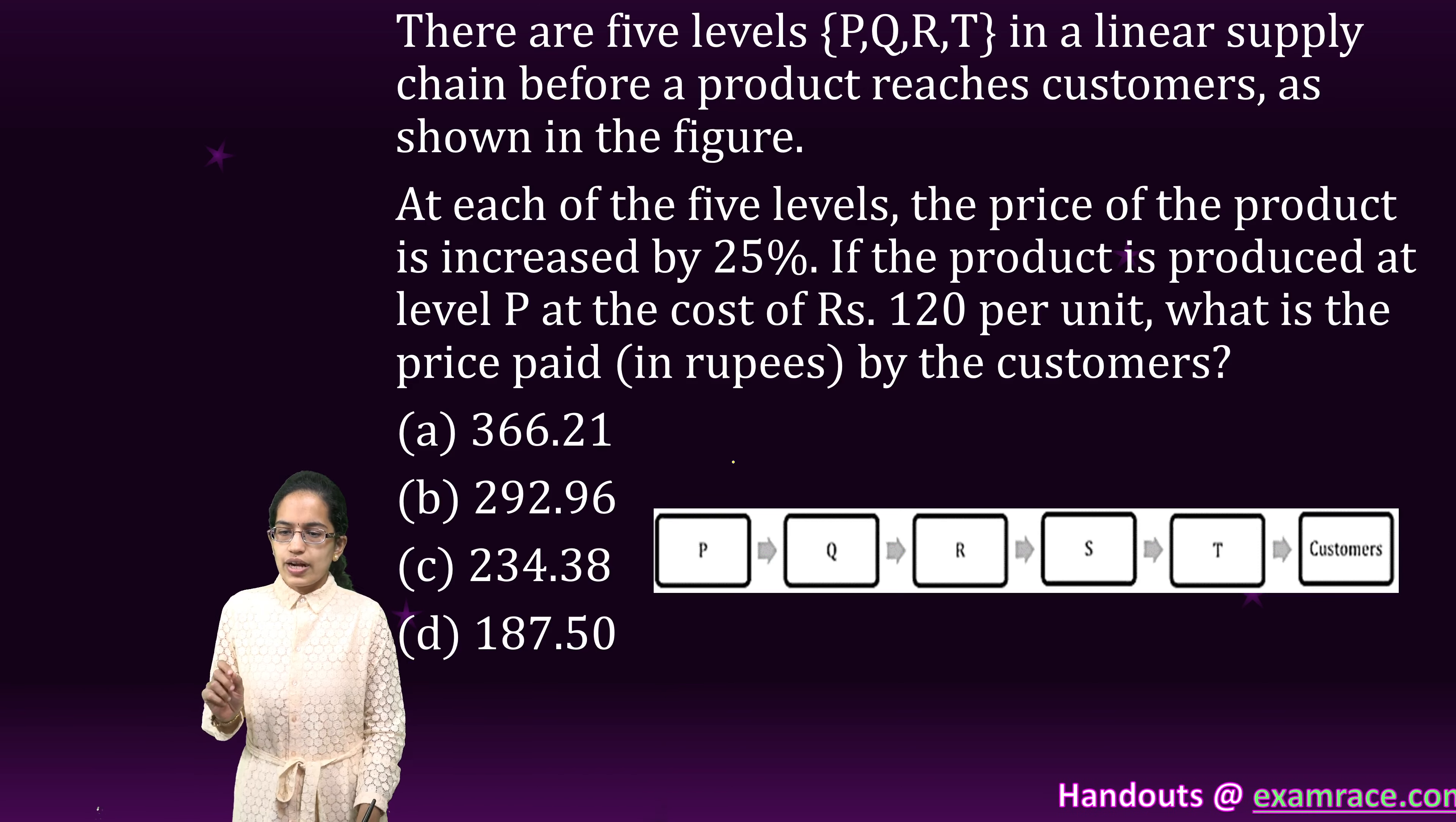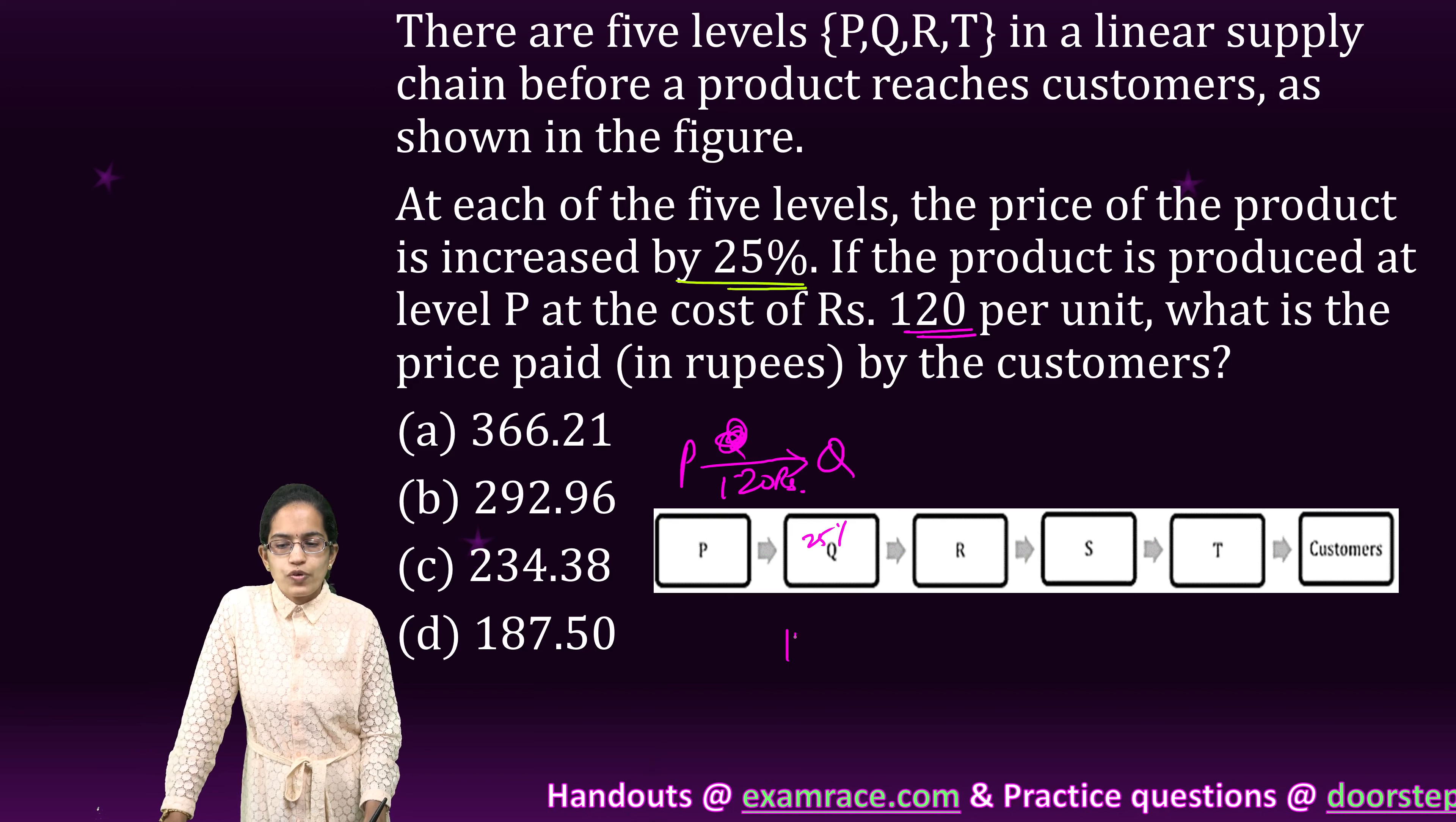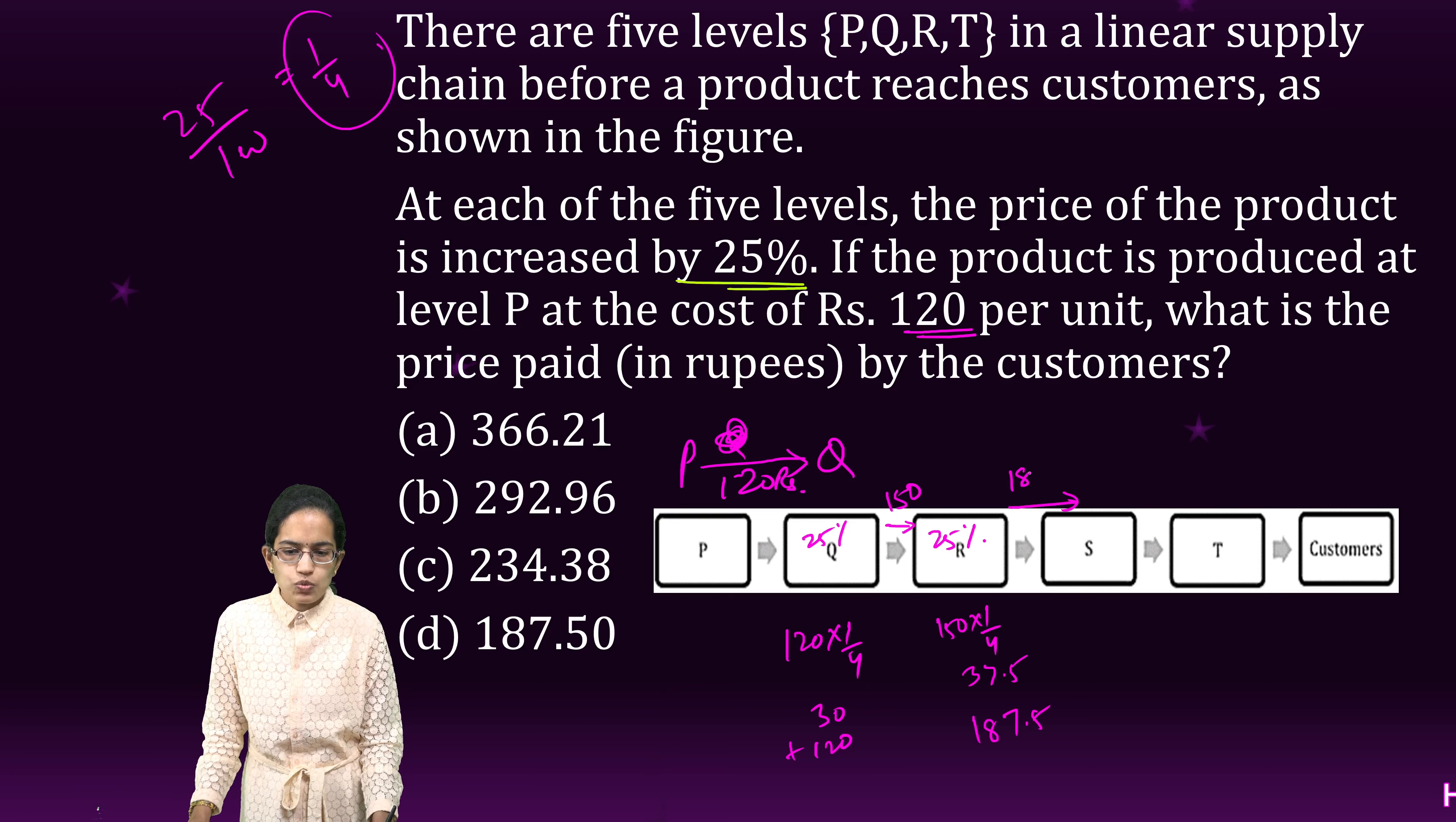The next question is pretty interesting. At each level, the price of the product is increased by 25%. If the product is produced at P at a cost of 120 per unit. So when it comes from P to Q it is 120 rupees. Now here you have 25% increase in the cost. So 25% of 120, so 120 into 1 by 4, that is 30. I add 30 to 120, that makes it 150. So on this line it becomes 150. Now again I increase it by 25%. So 150, one fourth of 150. So 25% is 25 by 100 and therefore I am using 25 by 100 which is 1 by 4. So I do 1 by 4 of 150 which is 37.5. I add 37.5 to 150, this gives me 187.5. So from R to S it becomes 187.5.